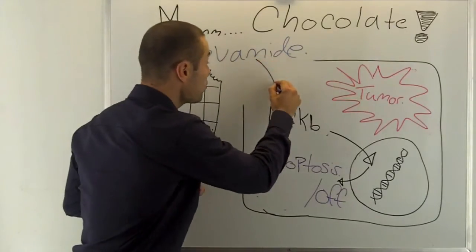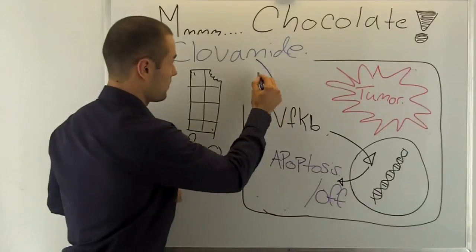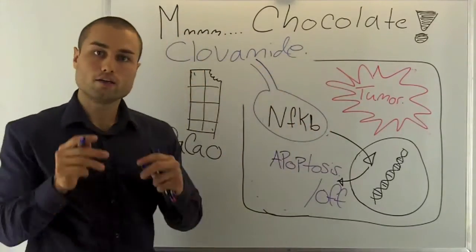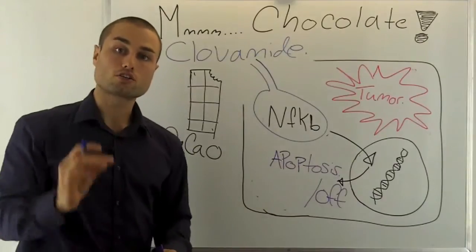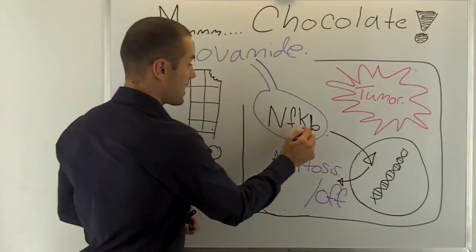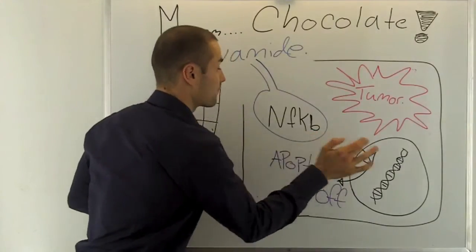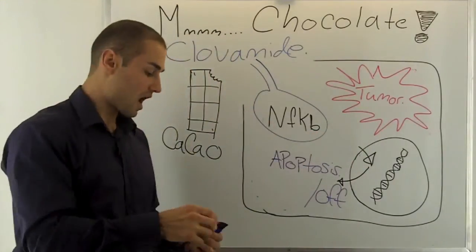and go to nuclear factor kappa beta and trap it. It'll actually stop nuclear factor kappa beta from going into your nucleus and from sending signals to your immune system to say stay alive.